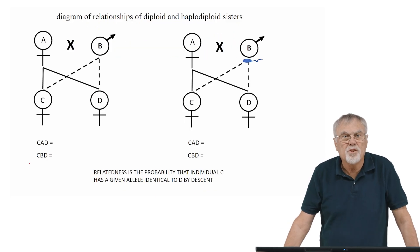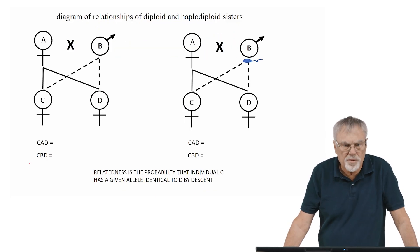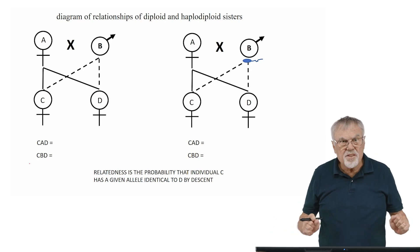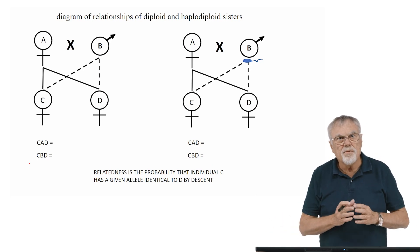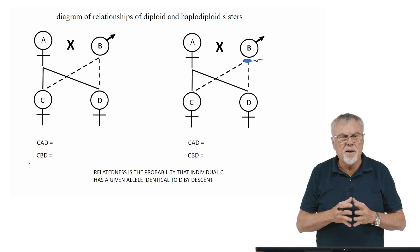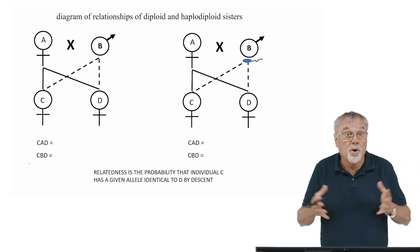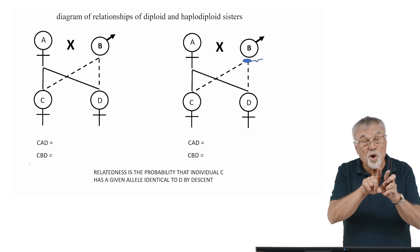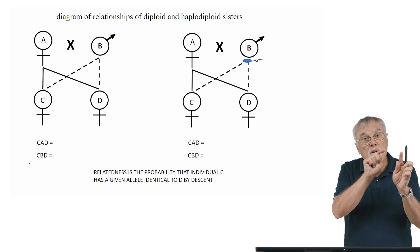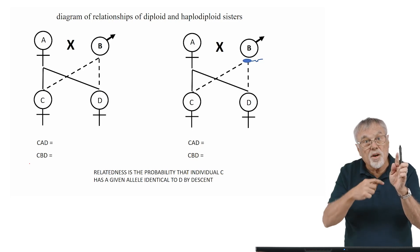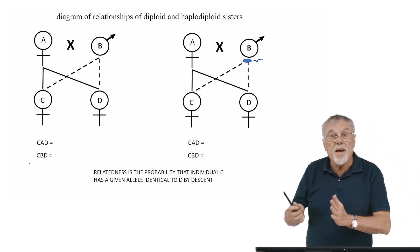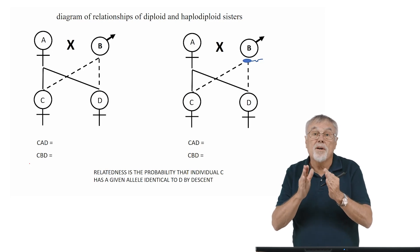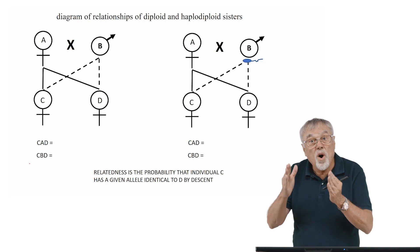To better understand what a genetic relationship is, let's look at two different cases. The case on the left is diploid individuals — say a family like us — where the mother and the father both have two sets of chromosomes, meaning they have two alleles at every gene locus. On the right, we have a haplodiploid family, such as you find with the Hymenoptera: the ants, bees, and wasps.